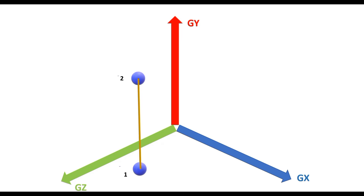Now consider the same member defined between nodes 1 and 2, but this time with node 2 as the start node and node 1 as the end node. The local X-axis will be aligned parallel to the global Y-axis, but the positive direction will be opposite. In the beta-0 condition, the local Z-axis would again be aligned in the same positive direction as the global Z-axis. Having identified both local X and local Z, we can identify the local Y-axis using the right-hand thumb rule. So we have identified the beta-0 configuration for a member parallel to the global Y-axis.